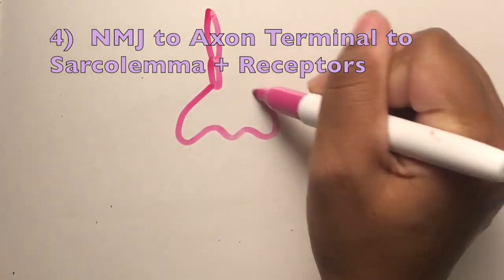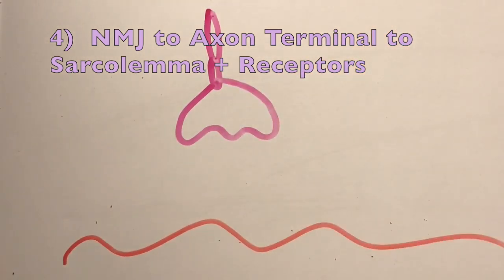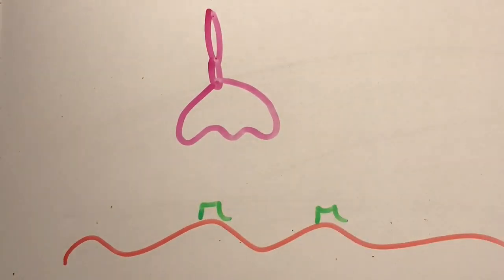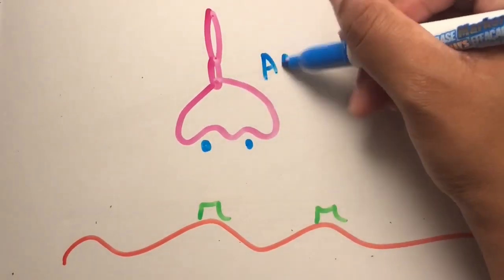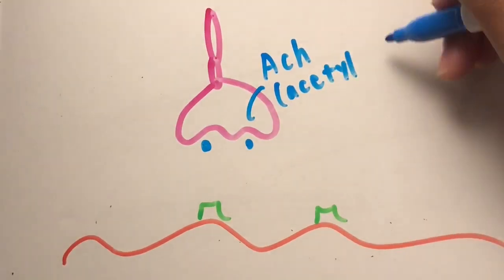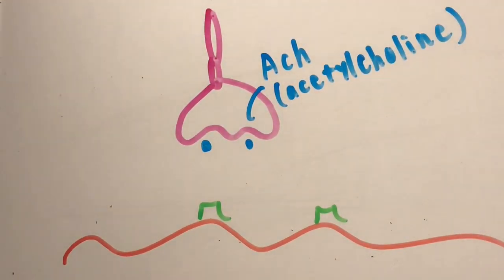Here we have our axon and axon terminal. The signal is carried through the terminal via the acetylcholine towards the sarcolemma. Attached to the sarcolemma are tiny receptors that take the ACH to each muscle fiber.